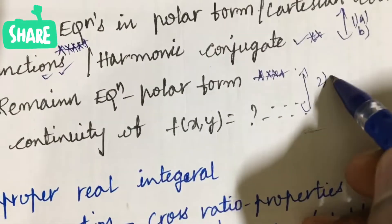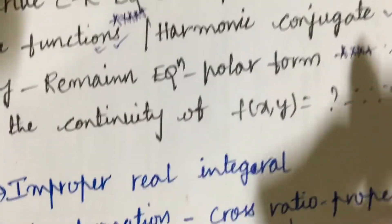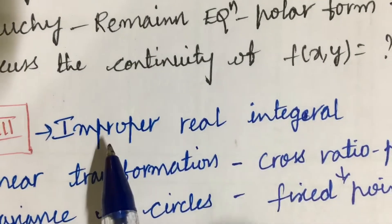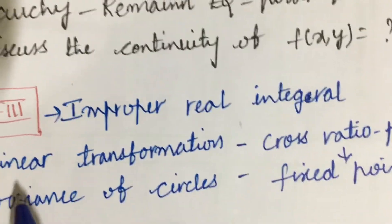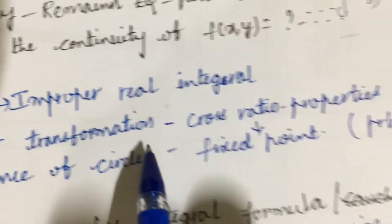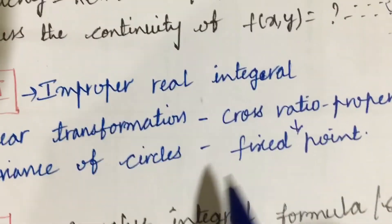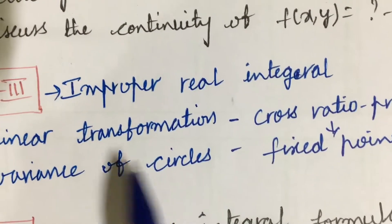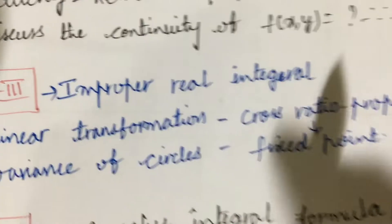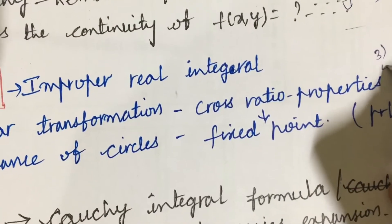Unit 3 is all about improper real integral, bilinear transformation problems related to cross ratio and properties, the fixed point as well as invariance of circles, and problems related to these concepts. You will be getting question 3 as well as the fourth question from this.